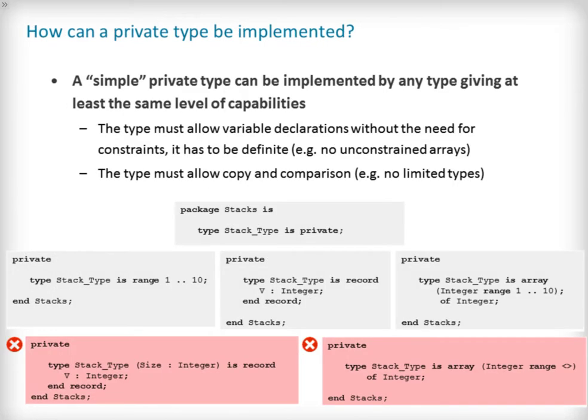There are two types of private types: simple private types and indefinite private types. Here we will cover simple private types. A simple private type can be implemented by any type giving at least the same level of capability. It must be a definite type and allow copy and comparisons, so this rules out unconstrained arrays and limited types.